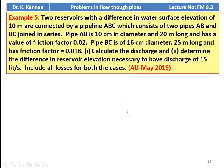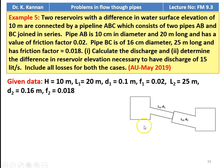Example number 5 from the May 2019 question paper: two reservoirs with a difference in water surface elevation of 10 m are connected by a pipeline ABC consisting of two pipes AB and BC in series. Pipe AB: diameter 10 cm, length 20 m, friction factor 0.02. Pipe BC: diameter 16 cm, length 25 m, friction factor 0.018. Calculate the discharge and determine the reservoir elevation difference necessary for a discharge of 15 liters per second. Include all losses for both cases.